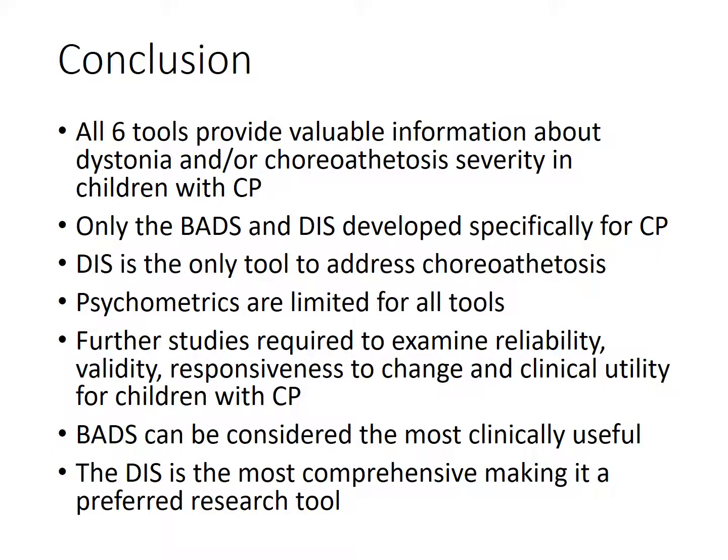In conclusion, all six tools provide some valuable information about dystonia and/or choreoathetosis severity in children with cerebral palsy. Only the Barry-Albright Dystonia Scale and the Dyskinesia Impairment Scale were developed specifically for cerebral palsy. The Dyskinesia Impairment Scale is the only tool to address choreoathetosis. Psychometrics are limited for all of the tools, and further studies are required to examine reliability, validity, responsiveness to change, and clinical utility for children with cerebral palsy.